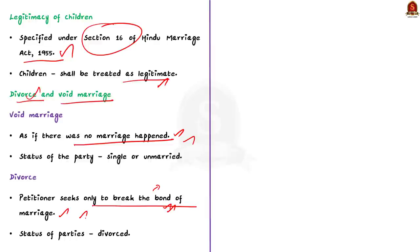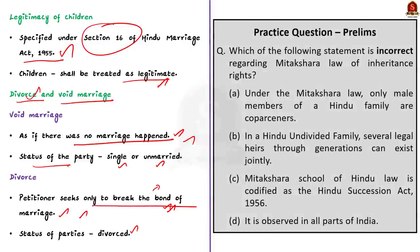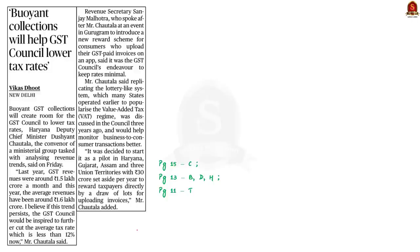After a void or voidable marriage, the status of the parties becomes single or unmarried, whereas after a divorce the parties become divorcees. So this is the difference between a void marriage and a divorce. In conclusion we saw the important observations made by the Supreme Court regarding void marriage, what is void marriage and voidable marriage, and the difference between a void marriage and a divorce.